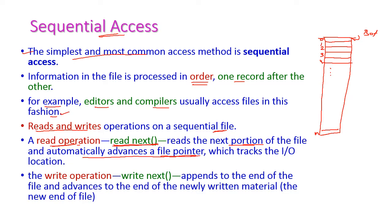The file pointer is automatically incremented by one — that is 'read next'. When it comes to the write operation, the file pointer will automatically move to the end of the file — EOF, end of file. If any write takes place on a record, it happens at the end of the file, and the file pointer advances to the newly written material, that is, the new end of file location — the n plus 1th location. This is how read and write operations take place in a sequential file.